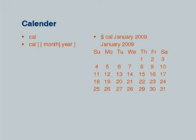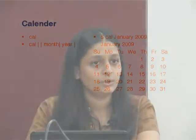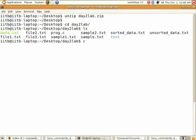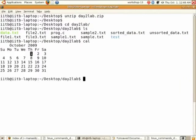You can type cal in your command prompt and you will get the calendar of this month, that is September. If you want the calendar for another month, say January 2009, then you will type cal January 2009. This is about the calendar command.